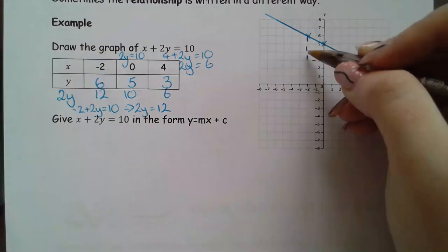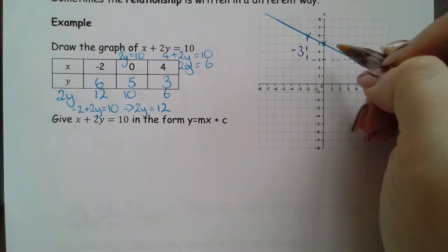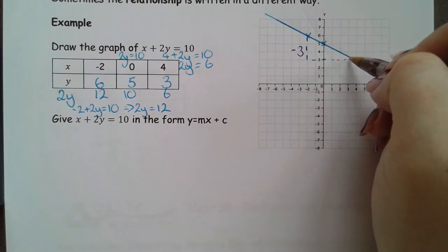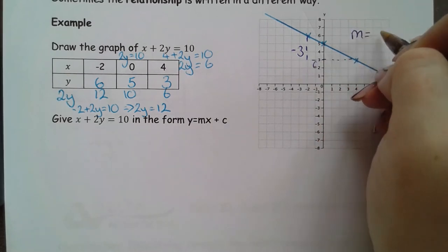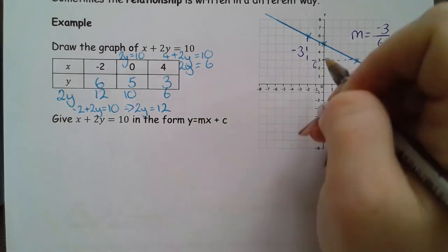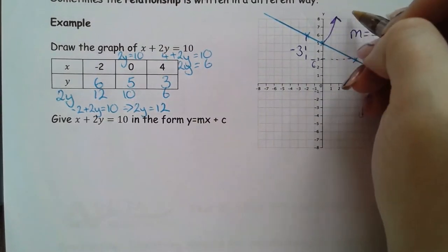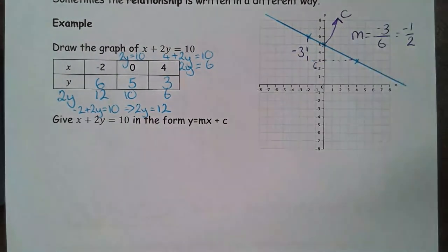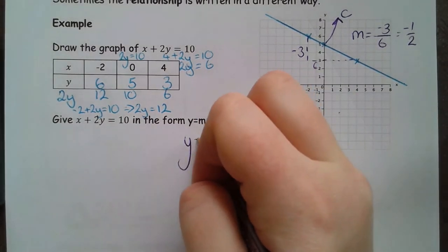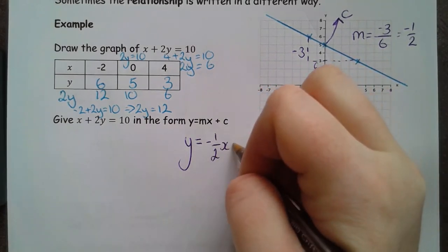I'm going from 6 down to 3. So, this is negative 3. And I'm going across 3, 4, 5, 6. So, my gradient is negative 3 over 6 or negative 1 half. And like before, we're quite lucky because we picked this 0 coordinate for x. But we now know that c is going to be that 5. So, my equation of my line in the form y equals mx plus c is y equals negative 1 half of x plus 5.